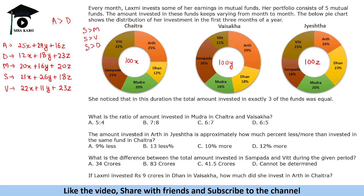Comparing Earth with Mudra and Width: Earth looks greater in both cases, with very large differences. Based on these logical comparisons, Earth and Sampada appear to be on the higher side of investment. So we assume that Dhan, Mudra, and Width are the three equal funds, and we proceed to equate their expressions.